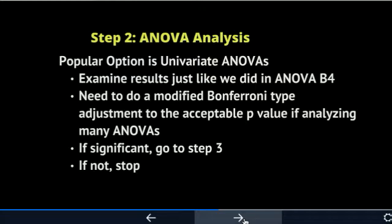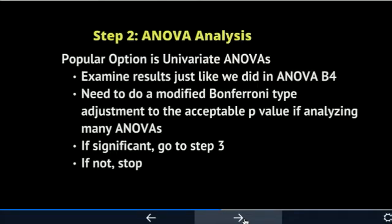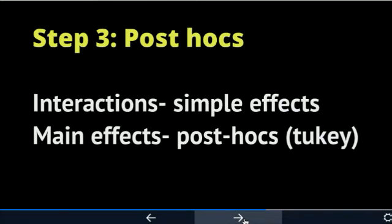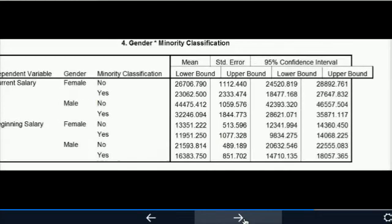If step two is significant, you go on to step three. For any ANOVA that is not significant, you do not go on to its step three — every ANOVA has its own possible step three. In step three, if you have significant interactions, you look at simple effects. If you have main effect significance in step two, you look at post-hocs such as Tukey or Bonferroni. Note: the Bonferroni adjustment is different from the post-hoc Bonferroni — Bonferroni was a very prolific statistician with many things named after him.